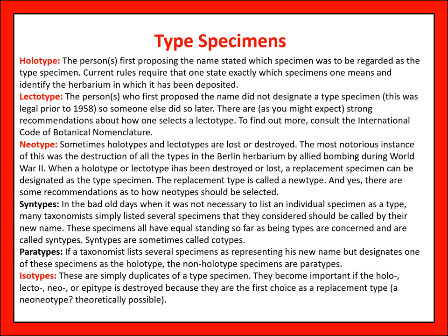For the holotype, the person first proposing the name stated which specimen was to be regarded as the type specimen. For the lectotype, the person who first proposed the name did not designate a type specimen. The neotype is designated when holotype and lectotype are lost or destroyed — the most notorious instance was the destruction of all types in the Berlin herbarium by allied bombing during World War II. Isotype, paratype, and osteotype are similarly duplicates of a type specimen.